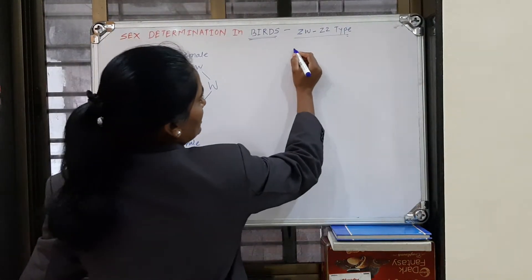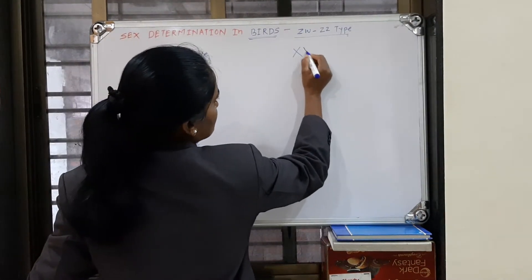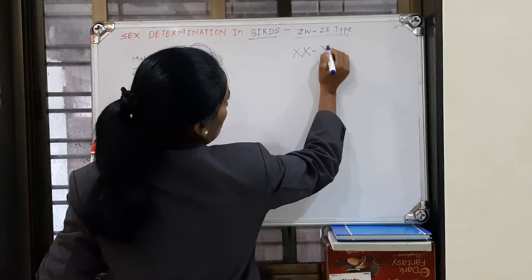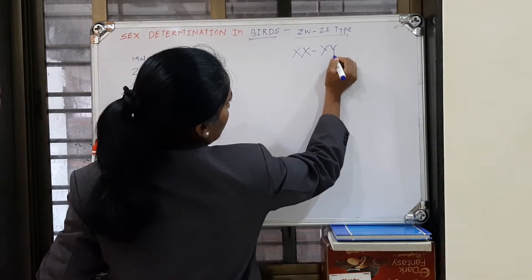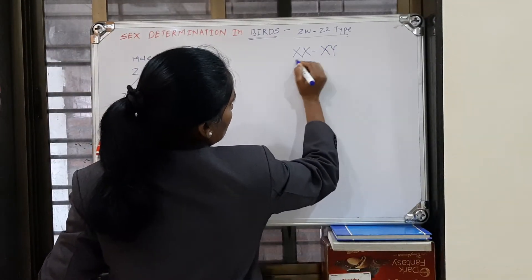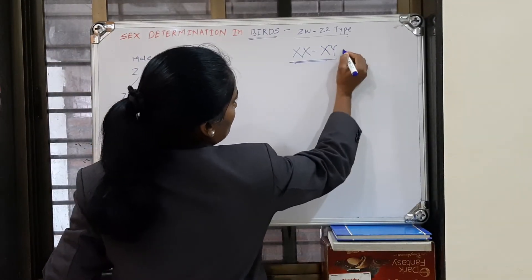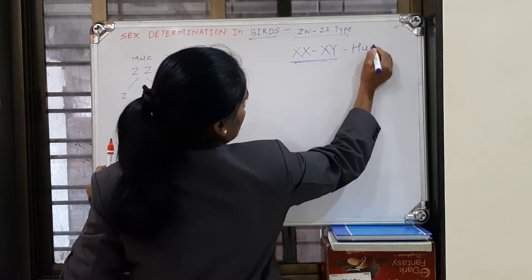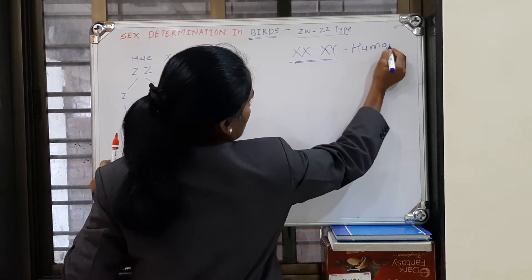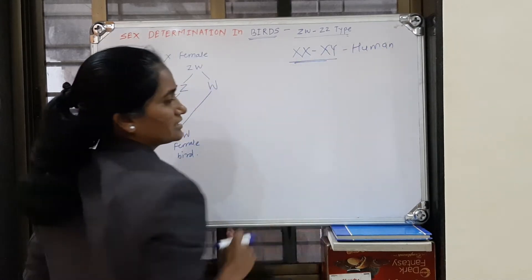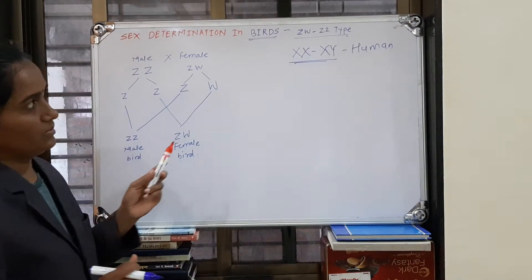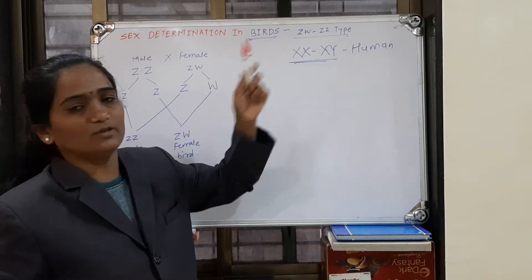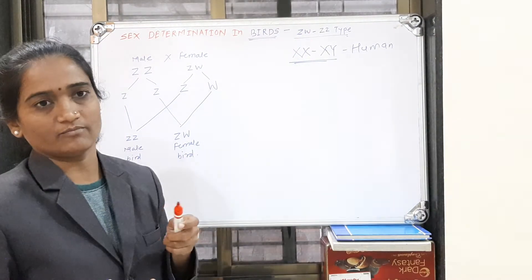In human beings, it is the XX/XY type, whereas in birds it is the ZW/ZZ type.